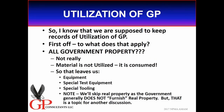Here are some rhetorical questions. We're supposed to keep records of utilization of government property — so to what type of government property does this apply? Really, it's not all government property, because material is not utilized, it's consumed. That leaves four other classes in the government property typology: equipment, special tooling, special test equipment. I'm not going to deal with real property because the government really doesn't furnish real property — that's another topic.